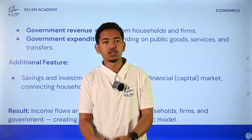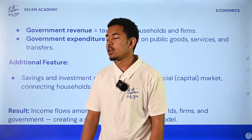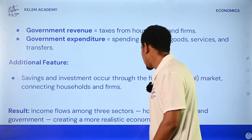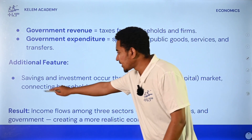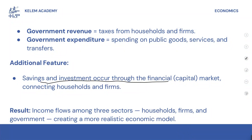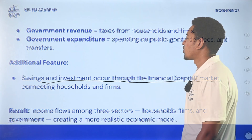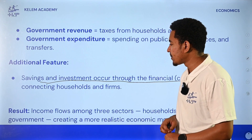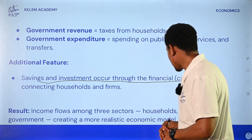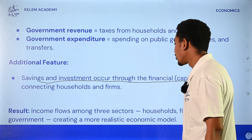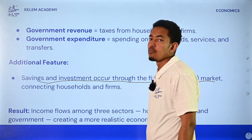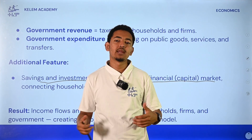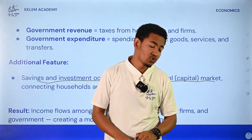The government has to connect to a financial market. The financial market exists, connecting with the household. In this case, the income flow among the sectors of the firm and government is creating a more realistic economic model. If the two models are more inclusive, we can see the government added.